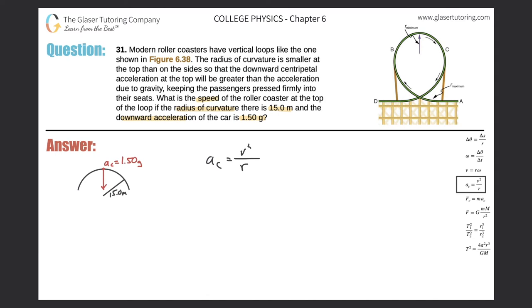So solving for v, cross multiply these two things. So it'd be a_c times r equals v squared. Simply square root both sides. v will then be equal to the square root of the centripetal acceleration times the radius.